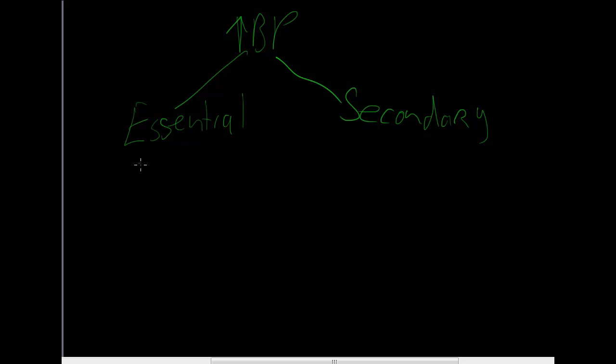So there's two types of hypertension. We have essential, also known as primary, and we have secondary. Today I'm mostly going to be talking about essential. Essential hypertension is what 95% of hypertension is, whereas secondary is just 5%. So we can see that clinically, essential hypertension is much more important. It doesn't mean secondary hypertension isn't important, but not many people have it.